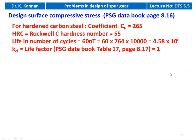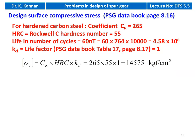Calculate design surface compressive stress. For C45 hardened steel from page 8.16: Cr = 265, Hrc = 55. Life in number of cycles = 60 × N × t = 60 × 764 × 10,000 = 4.58 × 10⁸. Since this exceeds 10⁷, life factor Kcl = 1. So σc = Cr × Hrc × Kcl = 265 × 55 × 1 = 14,575 kgf/cm².